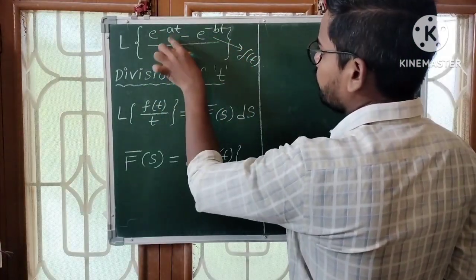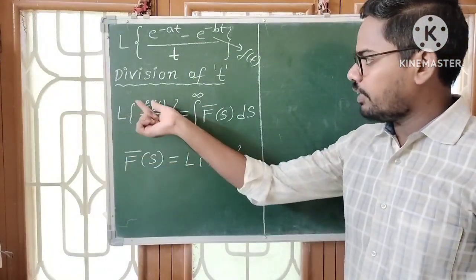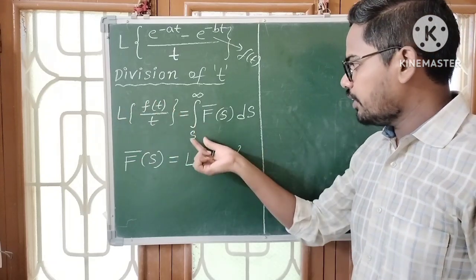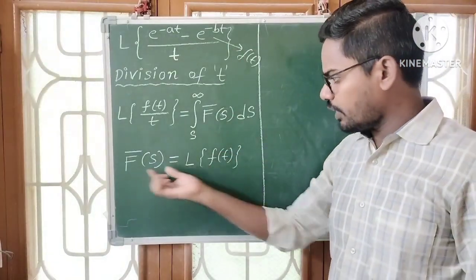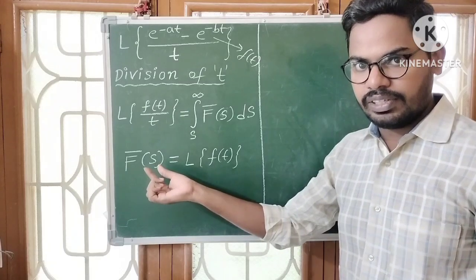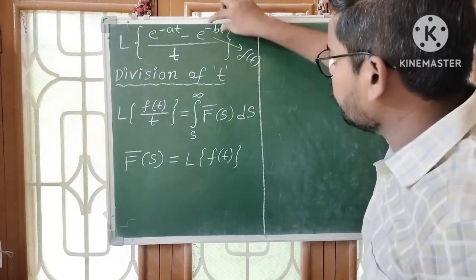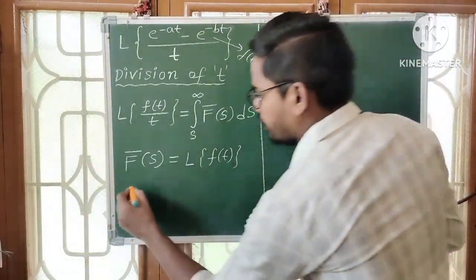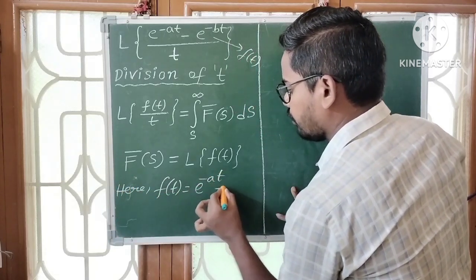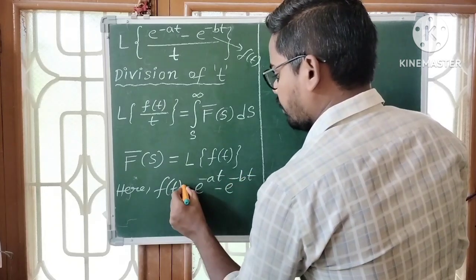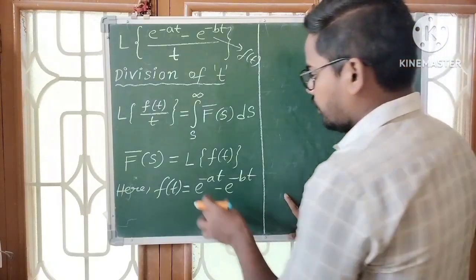First, we need f̄(s), so we have to find L{f(t)}. In this question, f(t) is the numerator function: f(t) = e^(-at) - e^(-bt). So let us find f̄(s) first.